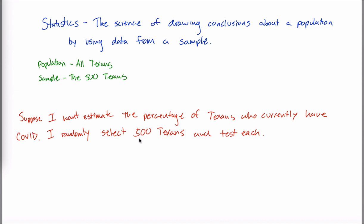What you don't do is go down to the University of Texas in Austin and find 500 freshmen in some dorm and test each of them. The problem with that is, yes, those would be 500 Texans, but that sample would not be representative of the population. Maybe a couple people in the dorm happened to test positive and infected everybody else, so the infection rate in the dorm is super high, but that's not really the rate you see all over Texas. You have to be careful — you want your sample to be representative of your population.